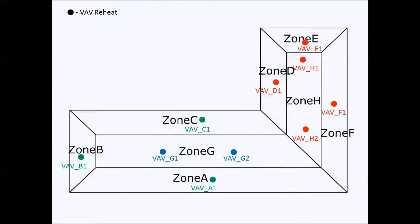AHU1 would be providing chilled air to these zones - zone A, B and C. So AHU1 would be providing cold air to three VAVs. And then these core zones VAV G1 and G2, AHU2 would be providing cold air to these zones.